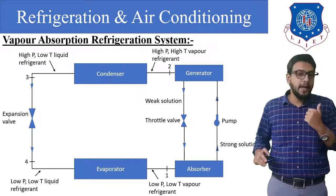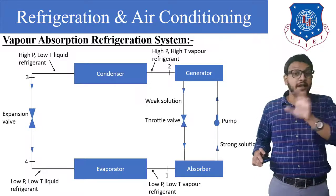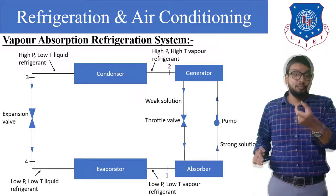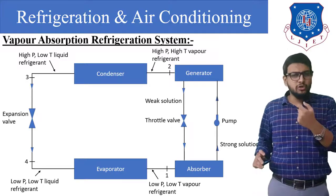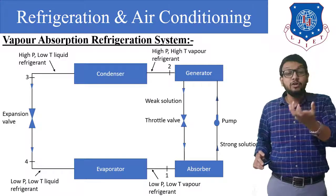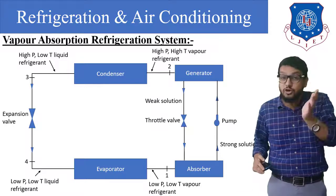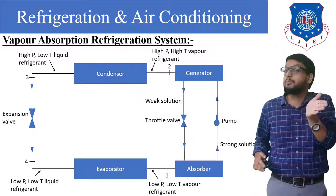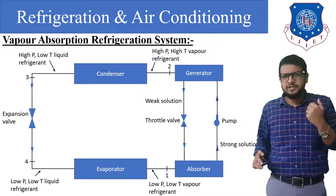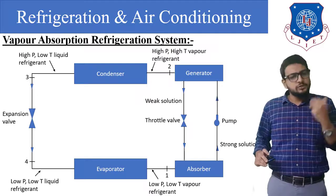The generator is not an electric generator. It is called a generator because heat energy is supplied to the strong solution of ammonia inside it. Because of that, ammonia's solubility decreases with increasing temperature, and vapor ammonia gets separated from the strong solution and enters the condenser. The throttle valve's function is to reduce the pressure of the weak solution flowing back from the generator into the absorber.